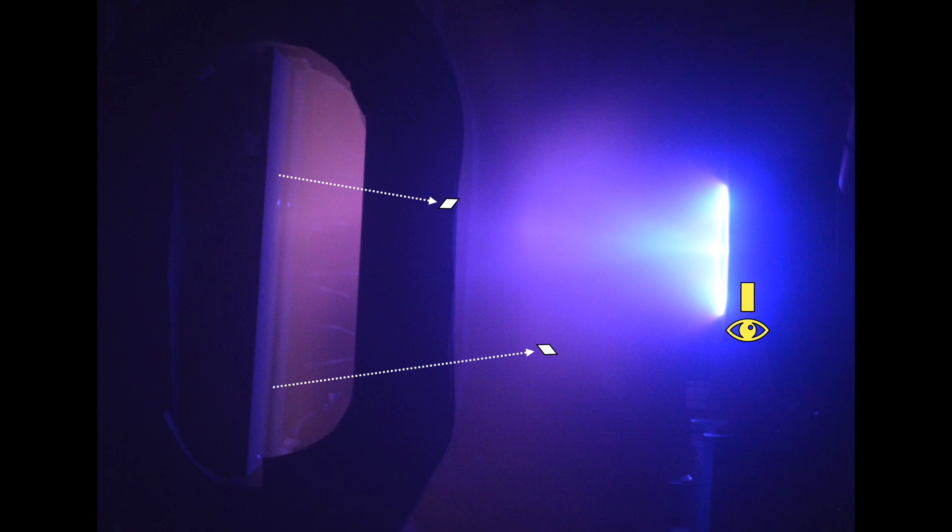Evidence that the beamcatcher was launching ions back at the thruster with enough energy to sputter material off both the thruster and our sensor. So what's happening?